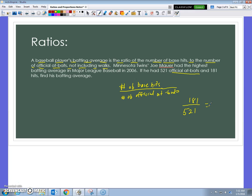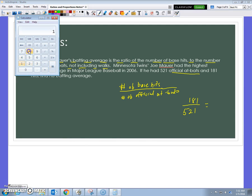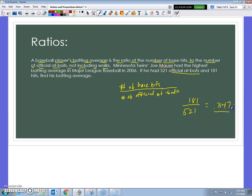So there's the ratio. Now, if I want to find the average, what I want to do is actually find the unit rate. I'm going to divide 181 divided by 521. So, 0.347, and if you know anything about baseball, you round three decimal places to the nearest thousandth. So, there's his batting average, 0.347. He led the Majors in 2006 with a 0.347 batting average.